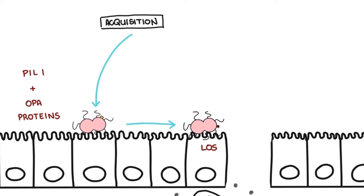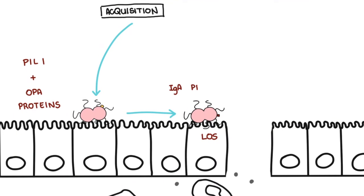Neisseria gonorrhea have something called IgA protease. This enzyme inactivates the host immunoglobulin IgA by cleaving the molecule in the hinge region, allowing the bacteria to pass this area without any problems.